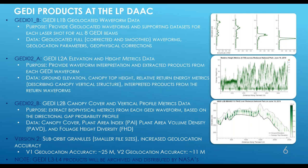The GEDI L2B canopy cover and vertical profile metrics product is what we'll focus on mainly today. The purpose of the L2B product is to extract biophysical metrics from each GEDI waveform based on the directional gap probability profile. Metrics include canopy cover, plant area index (PAI), plant area volume density (PAVD), and foliage height diversity (FHD). Today we'll be looking at version 1 of these products, but keep an eye out for version 2, which will split data into sub-orbit granules for smaller file sizes and improved geolocation accuracy of around 11 meters versus approximately 25 meters for version 1.